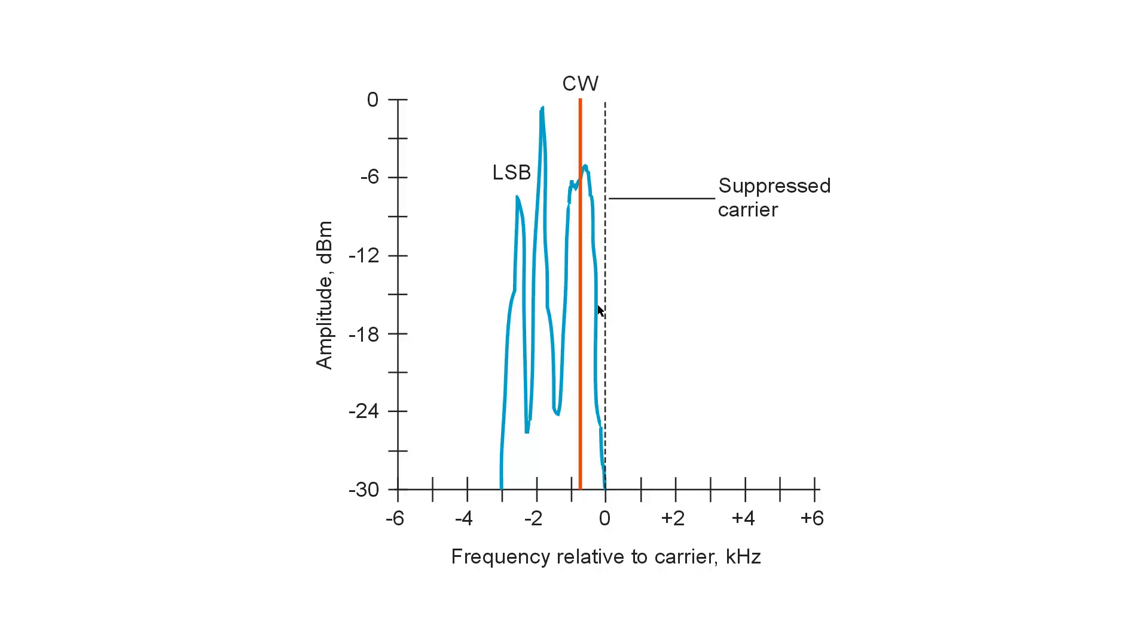But suppose that you want to listen to a CW signal with an SSB receiver. What do you do? You just tune the receiver so that its suppressed carrier replacement signal or BFO lies a certain number of hertz away from the frequency of the CW signal. In this case, maybe 750 hertz. In that case, you'll get a 750 hertz tone in the audio output of your receiver.